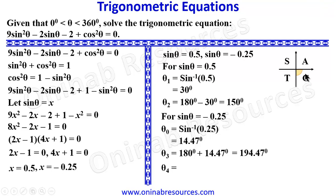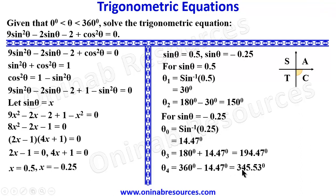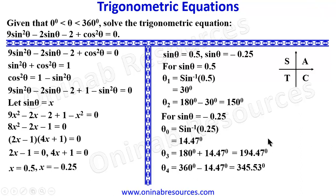For the fourth quadrant, θ is between 270° and 360°, so we subtract the reference angle from 360°: θ₄ = 360° - 14.47° = 345.53°. That gives us the fourth value of theta.